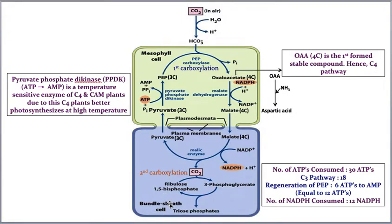The key question is: why does the C3 cycle happen in the bundle sheath in C4 plants? Rubisco is very sensitive to oxygen, especially at high temperatures. In summer, when temperature increases, Rubisco reacts with oxygen instead of CO2, causing photorespiration — a wasteful process that also wastes ATP.